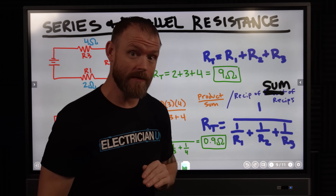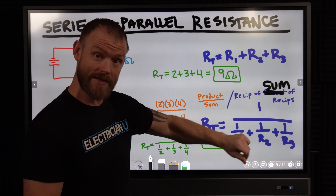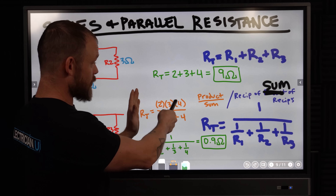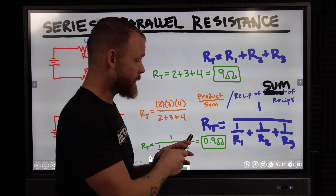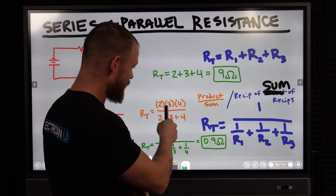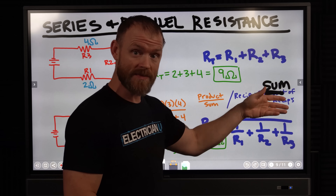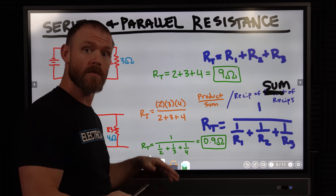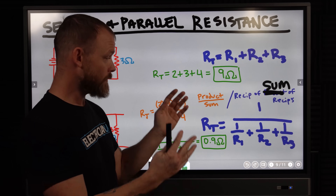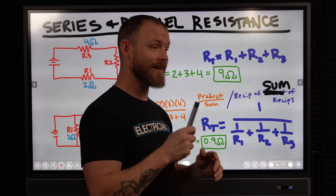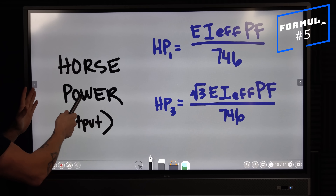An easier method is the product-over-sum approach: multiply all resistances together and divide by their sum. So (2 × 3 × 4) divided by (2 + 3 + 4) gives the same result. Super helpful — you'll run into a lot of this on your electrical theory exams.